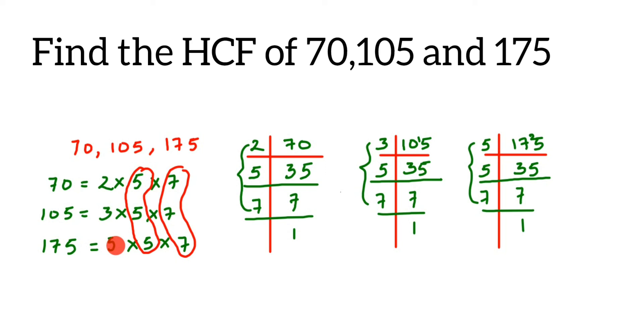For 2, 3, and the extra 5, they don't have any other common factors, so just leave it like that. HCF will be from each of these common factors you take one. So I'm going to take one 5 from here and one 7 from here. So 7×5 is 35. So 35 is the HCF of 70, 105, and 175.